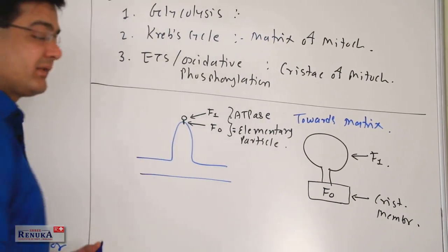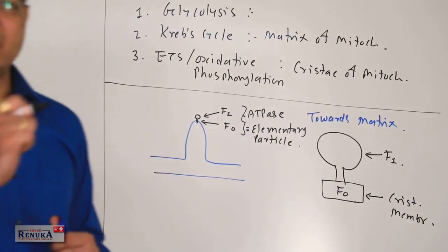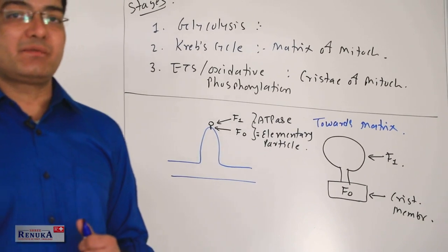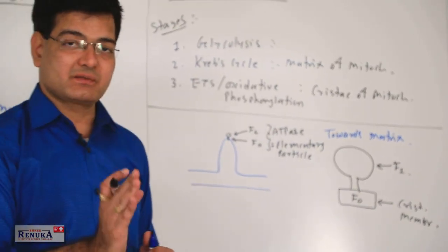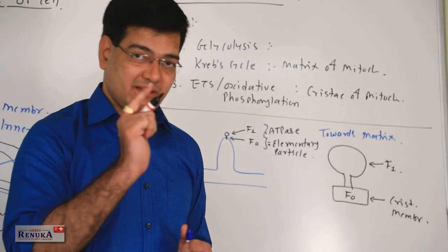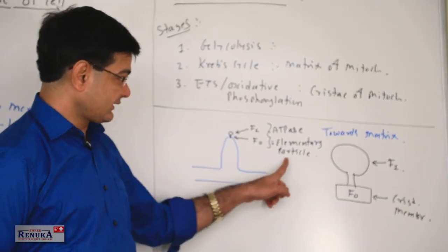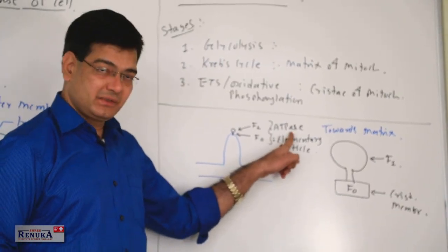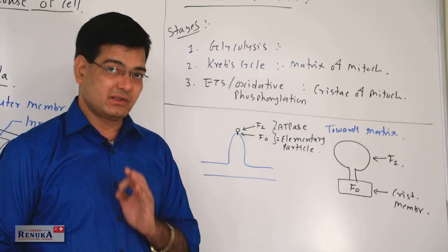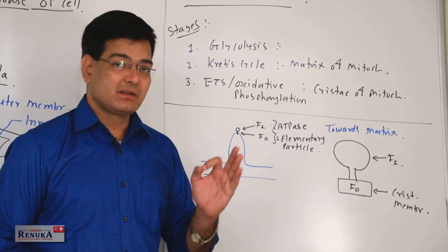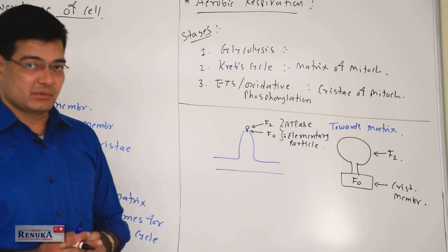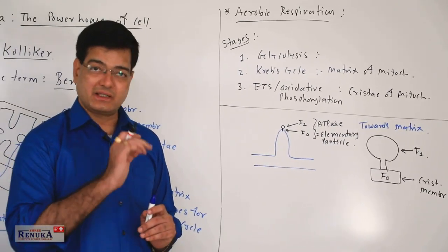Fernandez and Moran were the scientists who discovered the F0 and F1 particles, which are formed of a specific kind of ion-containing protein. That is why these elementary particles, or ATPase, or F0 and F1 particles, are also called Fernandez-Moran particles, and they are mainly responsible for oxidative phosphorylation.